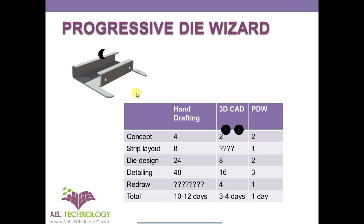When the designer was doing hand drafting in the early 1980s or 1990s, he may take approximately 4 hours to develop the blank development, unfolding, etc. To develop the concept he generally takes half a day. To define or design a strip layout he might take 8 hours, because he has to draw each stage, and drawing the same component in different stages is very tiresome. Then he doesn't have a standard die design.